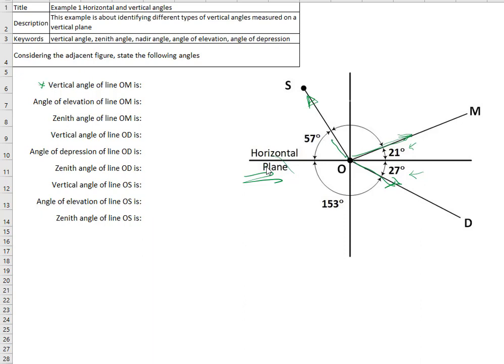Line OM is 21 degrees above the horizon, so it's a positive vertical angle — it is 21 degrees. The angle of elevation of line OM equals the positive vertical angle, so the angle of elevation is also 21 degrees.